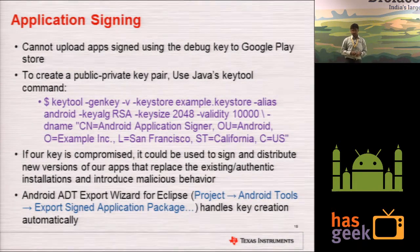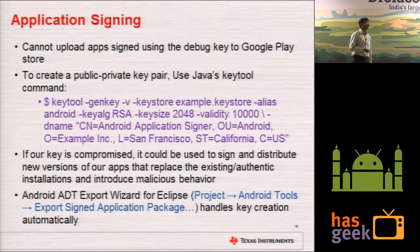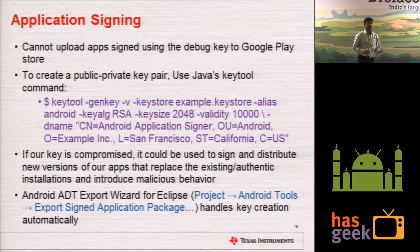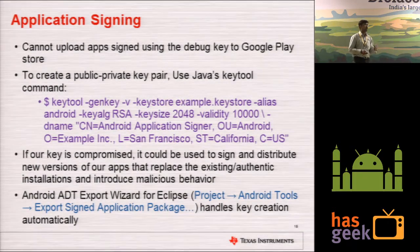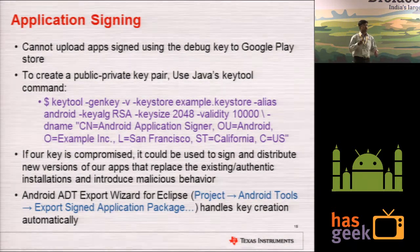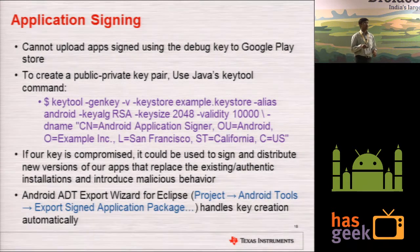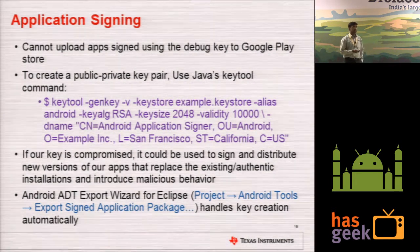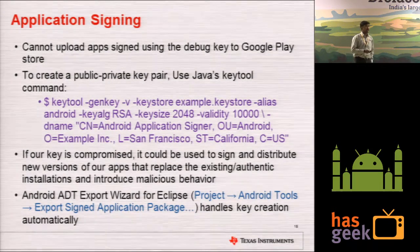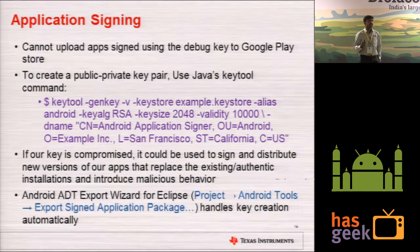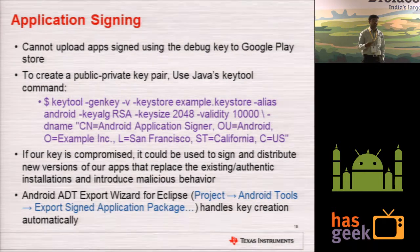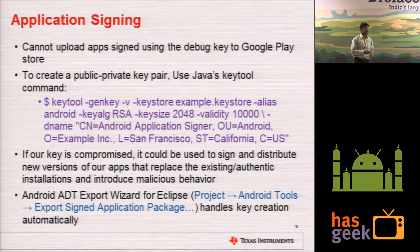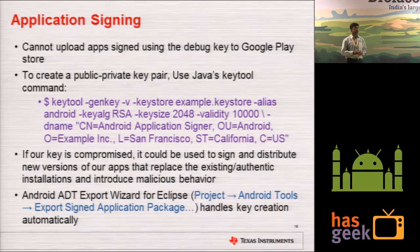There are debug keys and normal keys. You cannot sign an application with a debug key and upload it to Google Play. You have to create a private-public key pair using the key tool binary, which can be found in your SDK or in the Android sources in the host part tools. If this certificate is compromised, malware can use it to distribute a repackaged version of your application with malicious content. You can also use the Eclipse tool to sign your application.